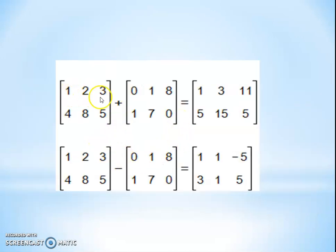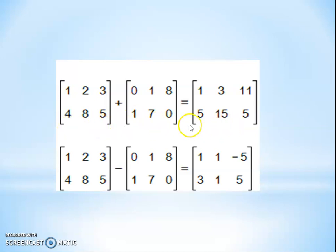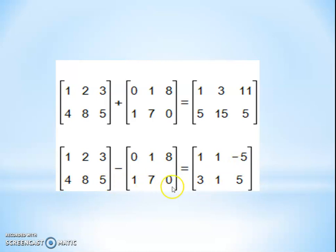The same trick applies for a 2 by 3 order matrix. With entries [1, 2, 3; 4, 8, 5] and [0, 1, 8; 1, 7, 0] — two rows and three columns. Addition: 1+0=1, 2+1=3, 3+8=11, 4+1=5, 8+7=15, 5+0=5. Subtraction: 1-0=1, 2-1=1, 3-8=-5, 4-1=3, 8-7=1, 5-0=5. We better understand the addition and subtraction of matrices.